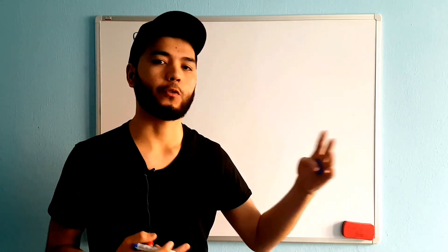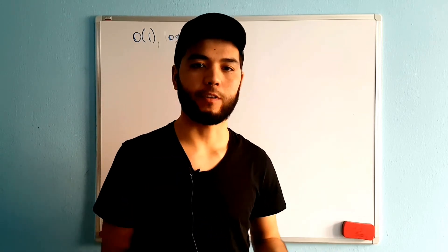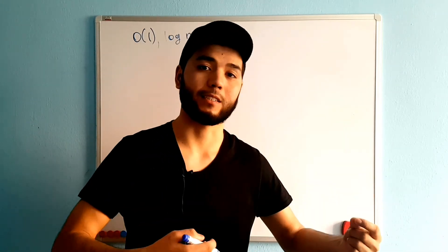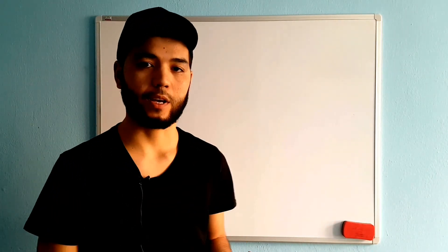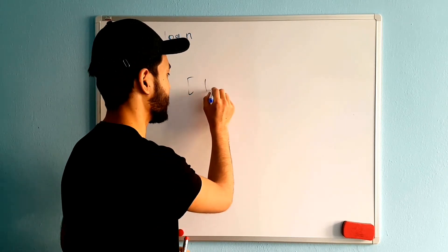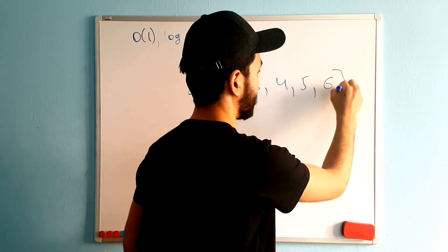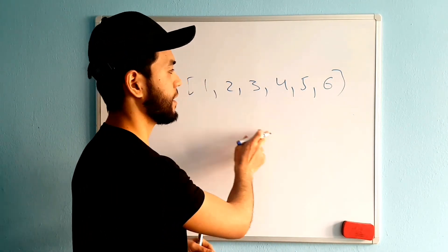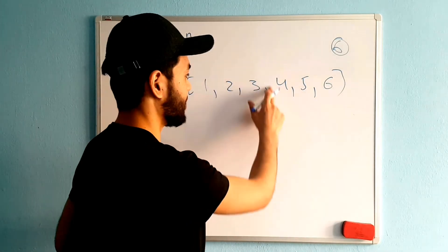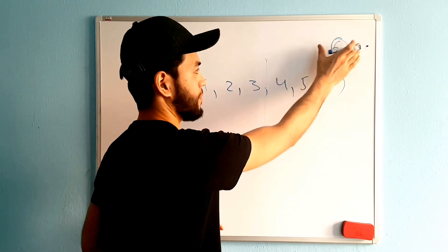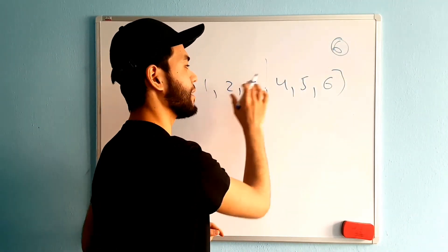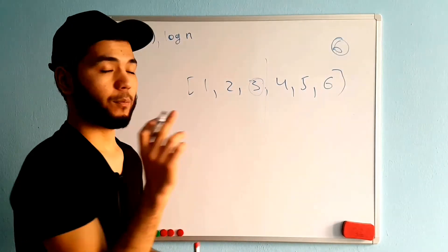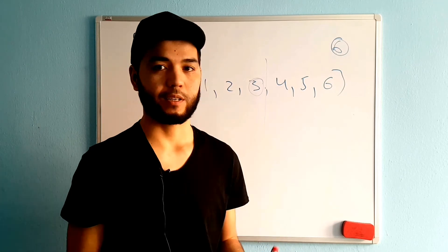Logarithmic time complexity, O(log n), applies when we're working with a huge amount of data but instead of iterating all values, we divide in half every iteration. One of the best examples is binary search. If I have an array — 1, 2, 3, 4, 5, 6 — and I want to search for 6, every time I divide the array in half and compare the target value to the middle value. Binary search requires the array to be sorted.